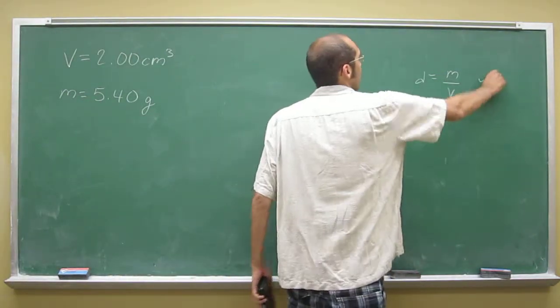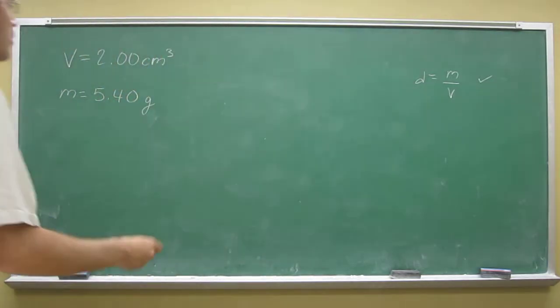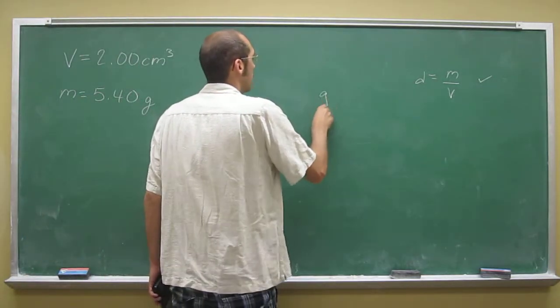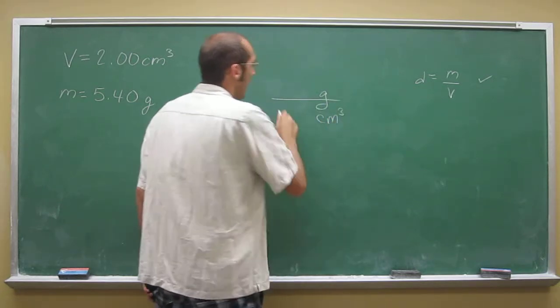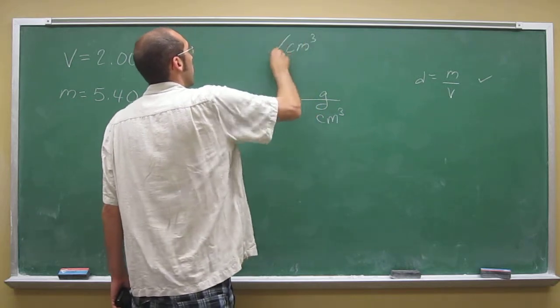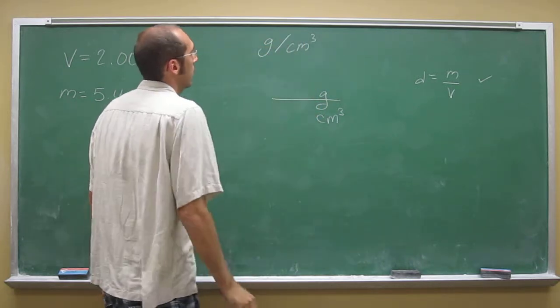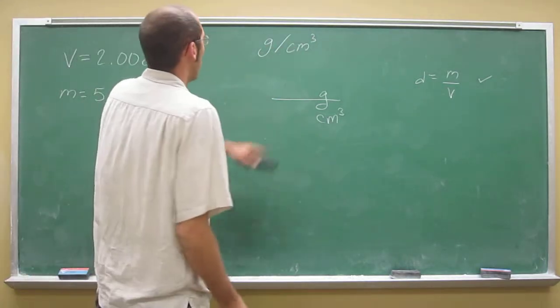Even though you've already memorized this formula, the problem told you to give it in grams per centimeter cubed, but it didn't show it like that in the problem. Remember, it shows it like this - that's the text message way of writing this same thing.